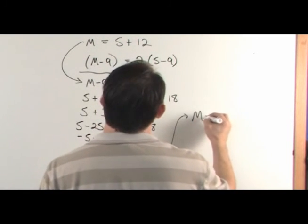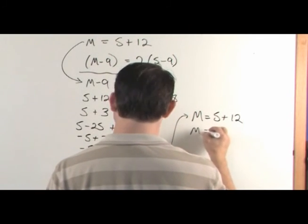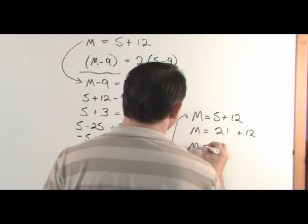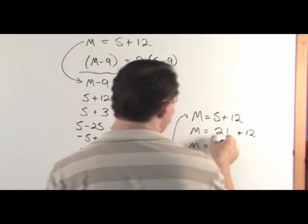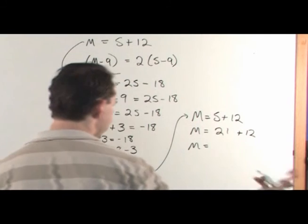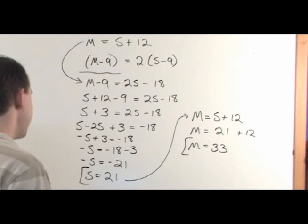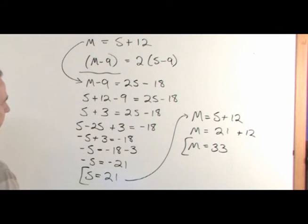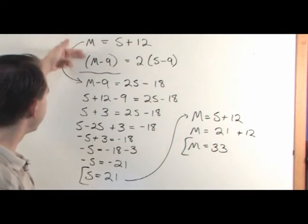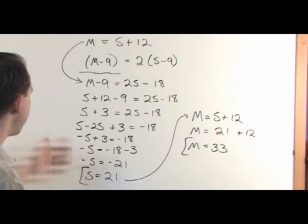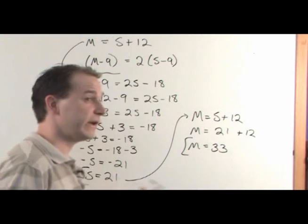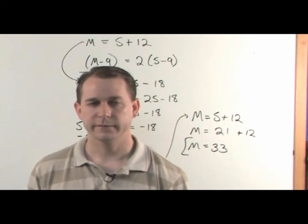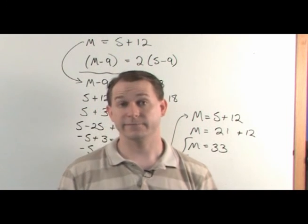To find Marie's age, plug Sally's age back into the equation we wrote for Marie: M = S + 12 = 21 + 12 = 33. So Marie is 33 years old and Sally is 21. There's no way I could have done this in my head without writing these two equations down. You write your first two equations, then it's just the math: plug one into the other, solve for the remaining variable, then back-substitute to find the other.